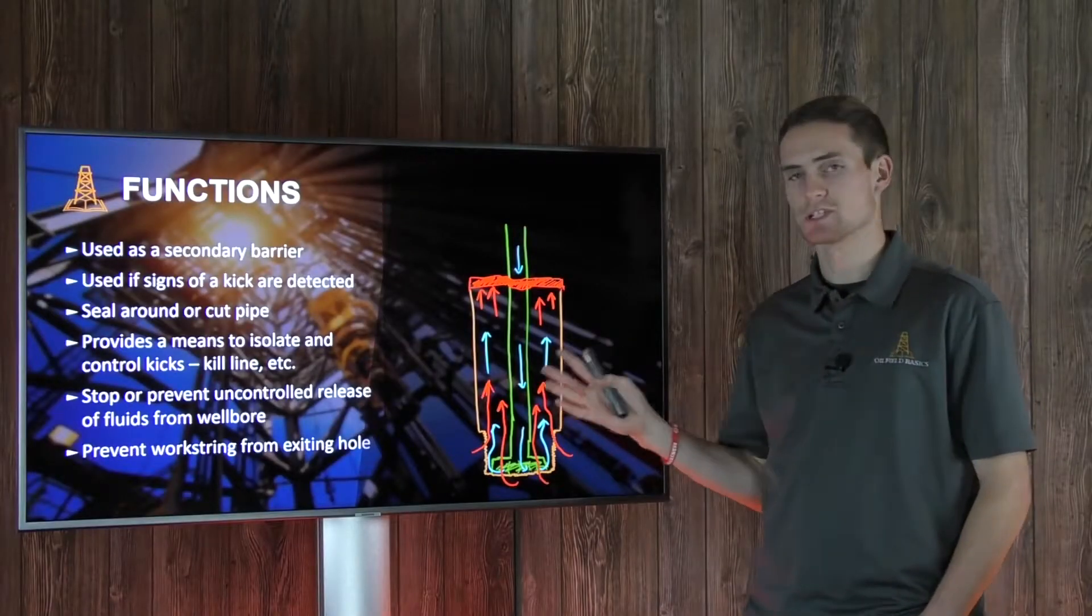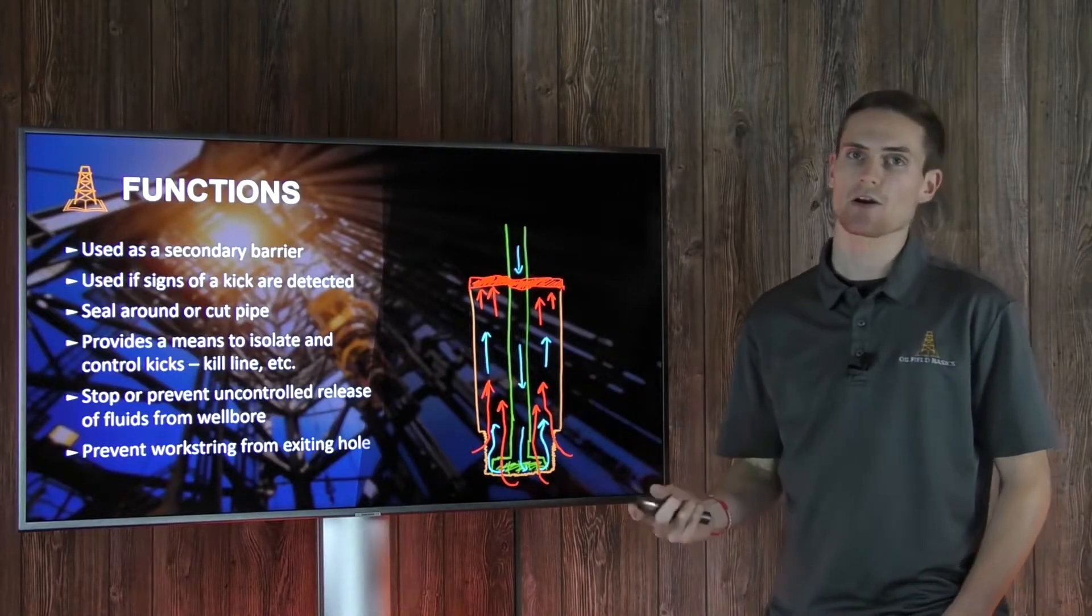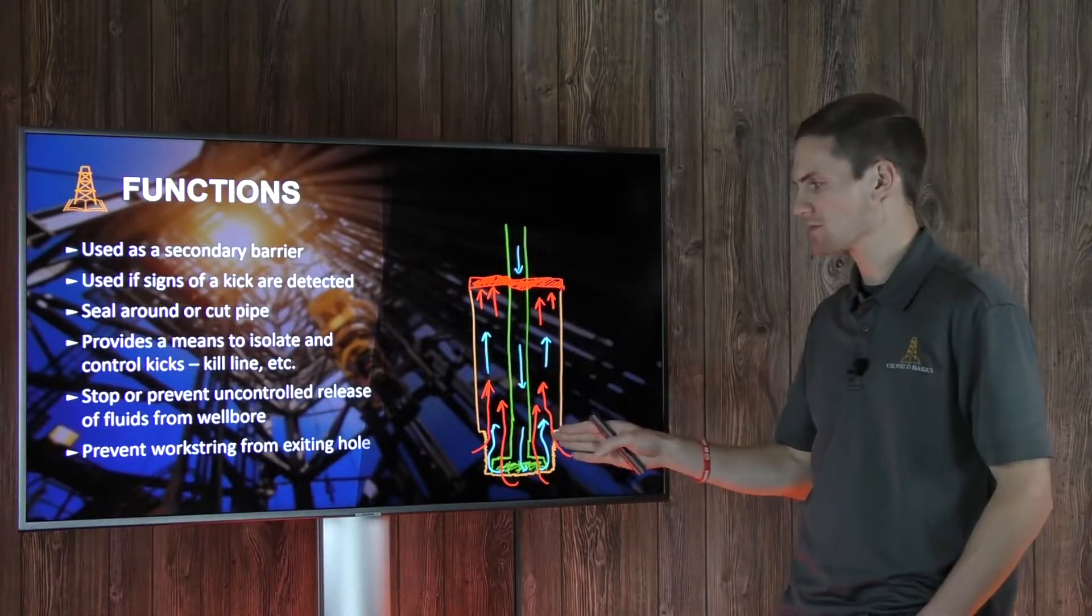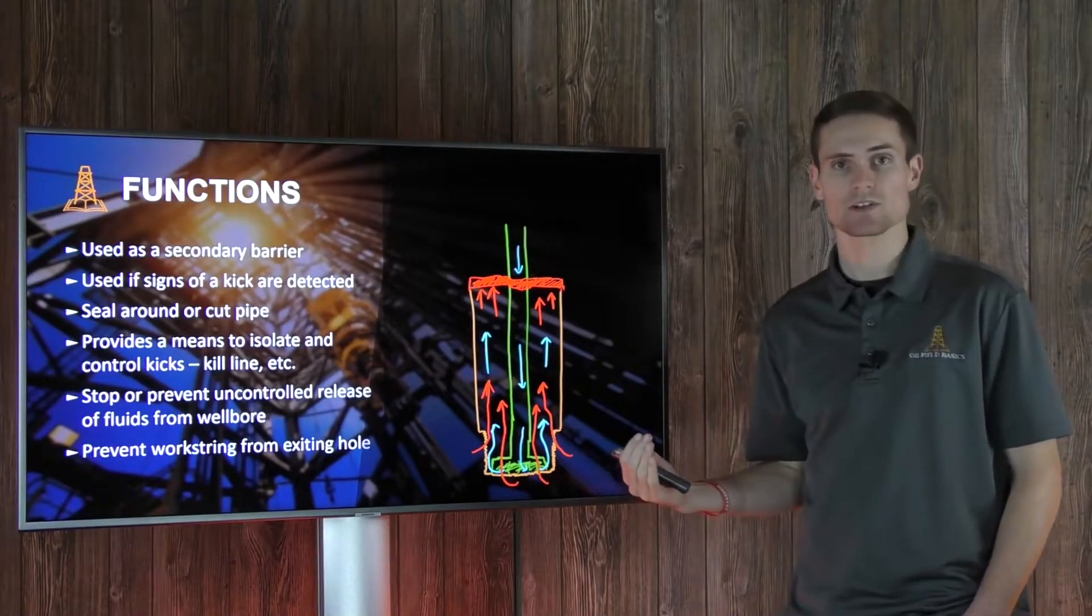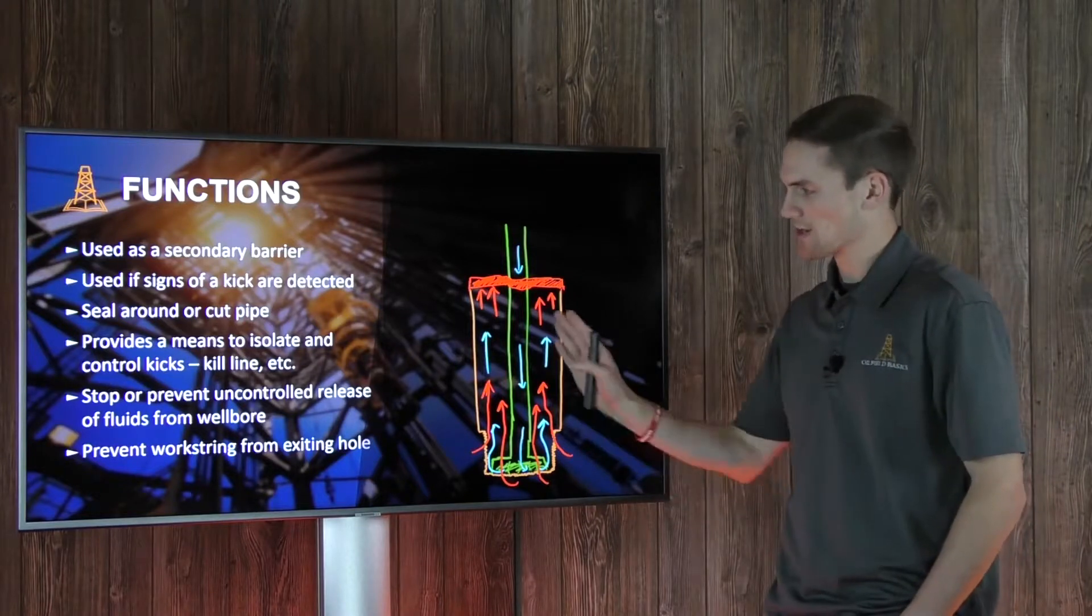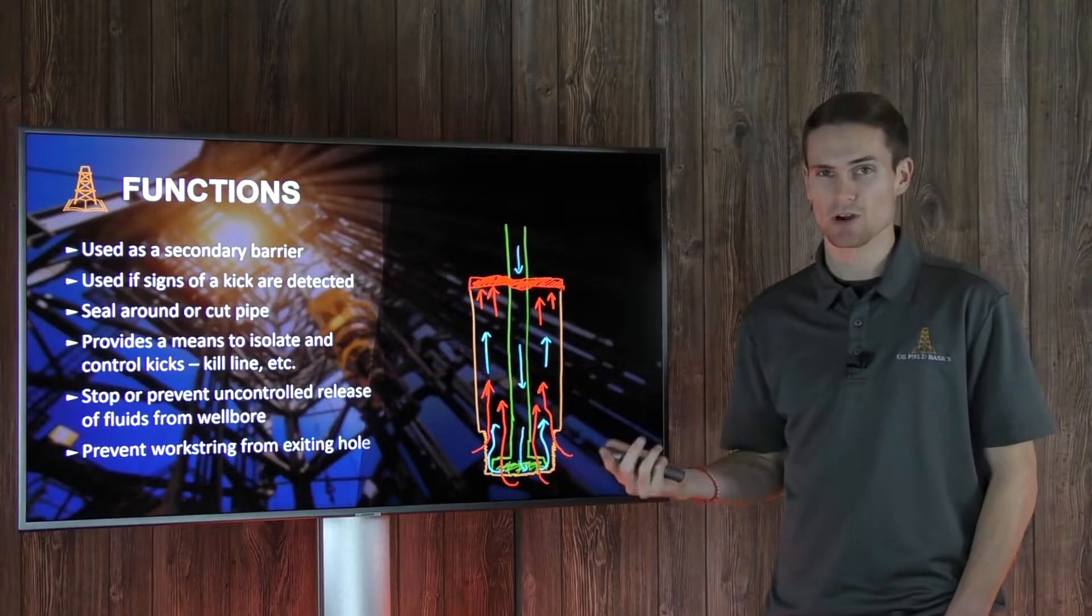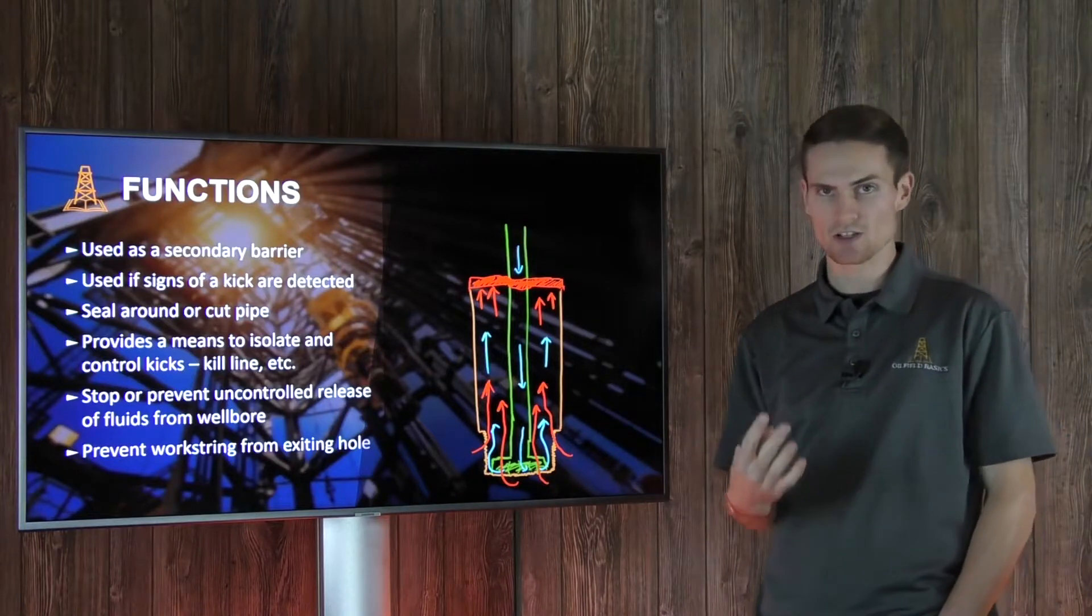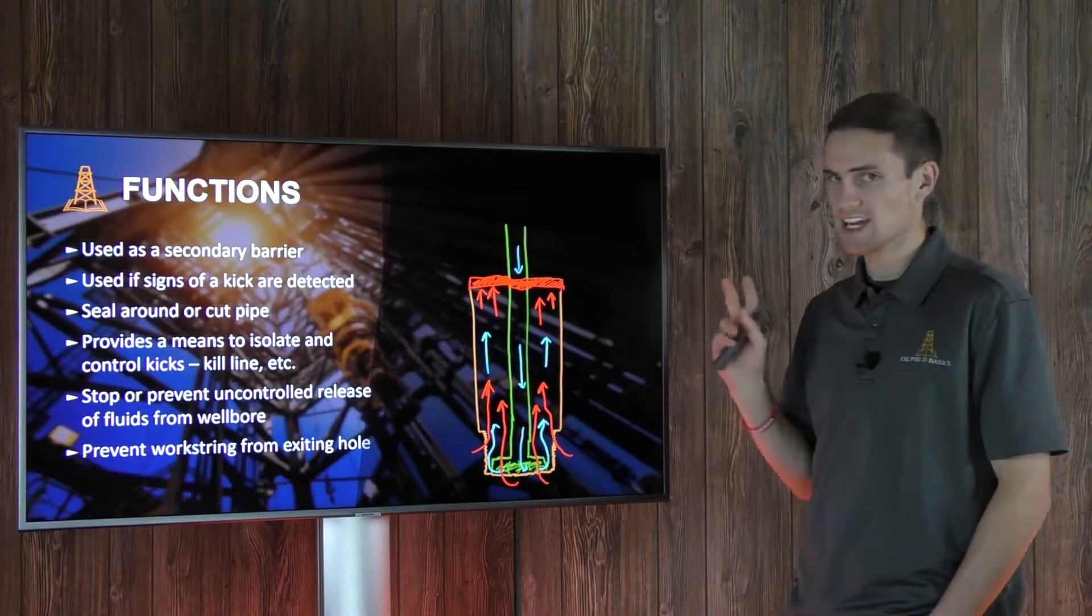So now let's begin to look at some of the specific functions of a BOP, first off being that it's used as a secondary barrier. So your first barrier is going to be your drilling mud which applies the hydrostatic pressure to the formation which helps keep those trapped hydrocarbons at bay so that they're not coming into the wellbore. But if it happens, this is going to be our secondary barrier. So we want to make sure that we have two barriers at all times during our operations for maximum safety, at least two barriers.